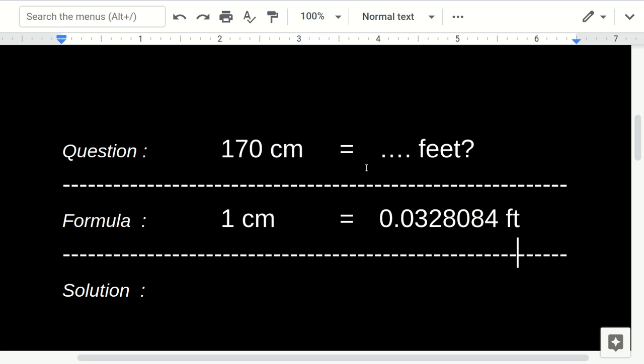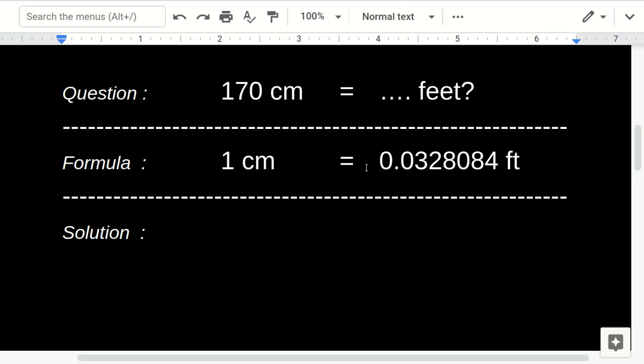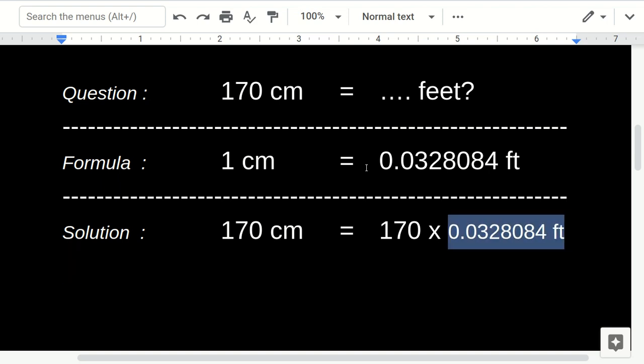Now here is the solution. First, 170 centimeters equals—the first thing you need to do is put that 170 here, and then you multiply 170 with this number. Now 170 centimeters equals, let's multiply this number.